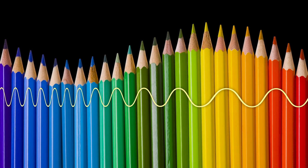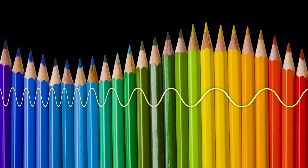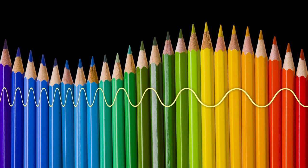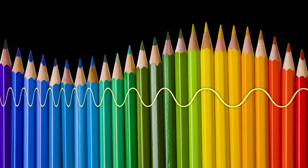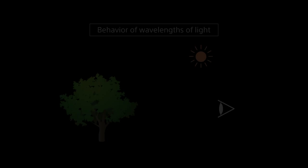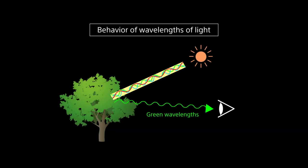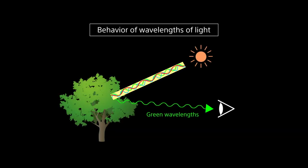Light behaves like a wave. As wavelength changes, we see different colors. For example, leaves appear green to our eyes because they mostly reflect green wavelengths.